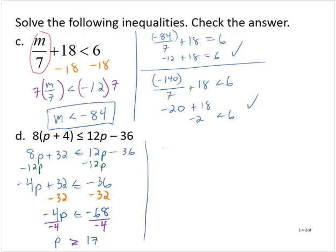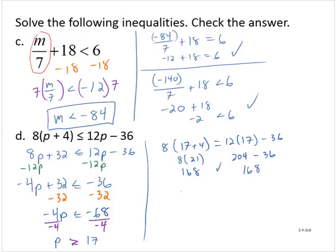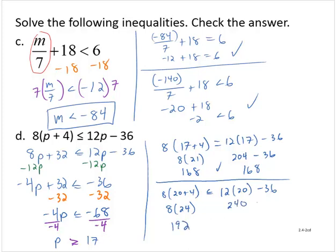Let's check our work. Substituting p equals 17: 8 times the quantity 17 plus 4 is 8 times 21, which is 168. On the right-hand side, 12 times 17 is 204, and 204 minus 36 is 168. So that checks out. Now checking a number greater than 17 — how about 20? Is 8 times the quantity 20 plus 4 less than or equal to 12 times 20 minus 36? That's 8 times 24 equals 192, which is less than 240 minus 36, which is 204. That checks out, so we can be confident in our solution.